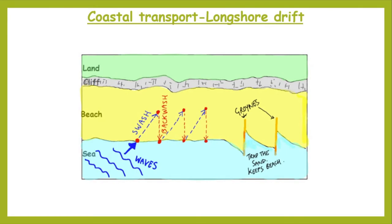Headlands and bays, cave arch stack stump — that's all to do with erosion, the wearing away and removal of material. Once that material is out in the sea, it gets eroded smaller and smaller mostly by attrition into sand particles, and that's what creates our beaches. The sand on our beach doesn't just sit in one place — it gets transported along by a process called longshore drift. This is all to do with waves.